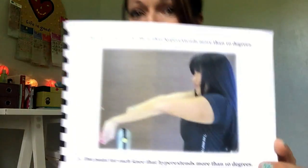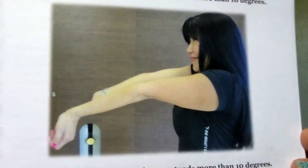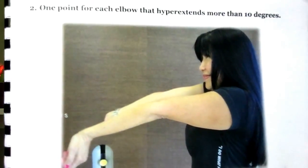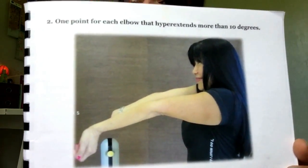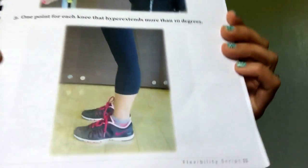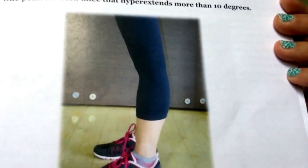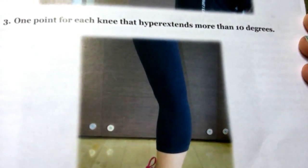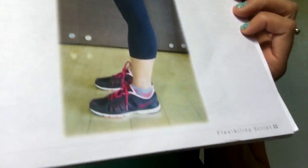For the elbows and knees, you want to make sure you are locking out your elbows and locking out your knees before you check. If you lock out your elbows and see extra extensibility where they hyper-extend, you get a point, and if you have both sides you get a point for each. For the knees, you're looking at the same thing — when you lock the knee out, if there's extra laxity and the knee goes into hyper-extension beyond 10 degrees, that's a point.